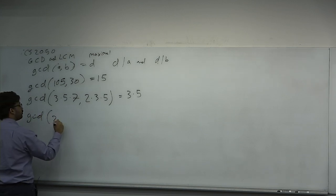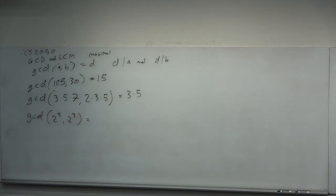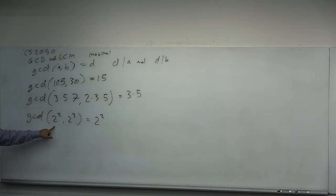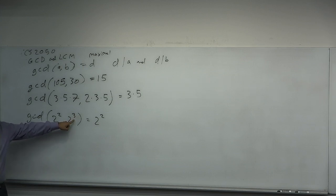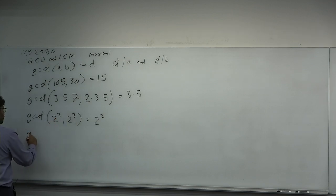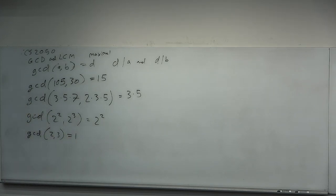If you have a set of prime factors, you take the smallest of the two powers, because that's the one that divides into both. 2 cubed does not divide into 2 squared. What about GCD of 2 and 3? The answer is 1. Two numbers are said to be relatively prime if the GCD of them is 1. In some sense, they are considered prime to each other.